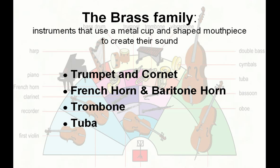The brass family are instruments that use a metal cup and a shaped mouthpiece to create their sound, and they include the trumpet and the cornet, the French horn and the baritone horn, the trombone and the tuba.